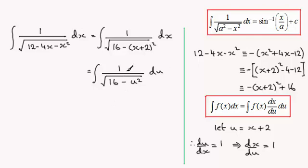And this takes on this format here. You can see that we've got the x's now replaced with u, and a squared is the 16 so a would be 4. So according to that formula then, this is going to be the inverse sine of u over 4 plus a constant of integration.